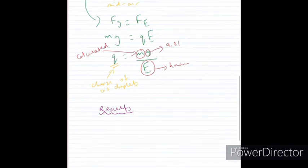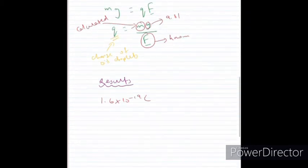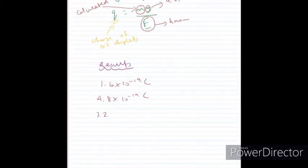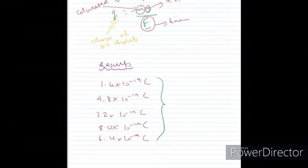The results he obtained were as follows. So one oil droplet he noticed was 1.6 times 10 to the power of negative 19 Coulombs. Another one was 4.8 times 10 to the power of negative 19 Coulombs. Another one was 3.2, 8.0, 6.4, and so on. And individually, these results are quite unremarkable. However, if you take a look at them together, we see that they are all multiples of 1.6 times 10 to the power of negative 19 Coulombs.